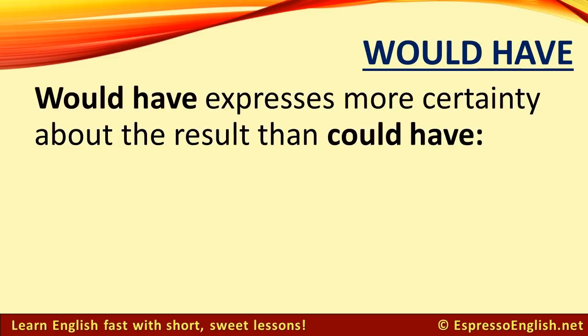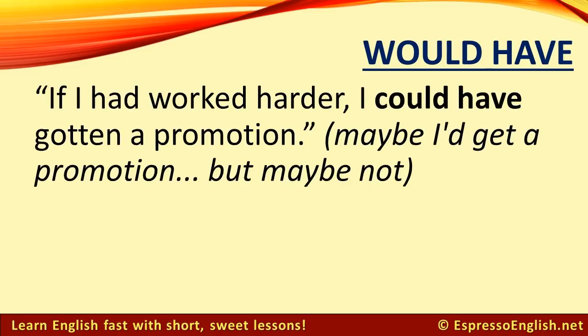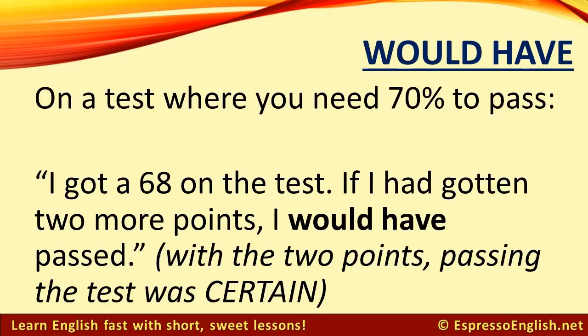Would have expresses more certainty about the result than could have. For example, if you say, If I had worked harder, I could have gotten a promotion — you're saying it was a possibility. Maybe I'd get a promotion, but maybe not. But consider a test where you need 70% to pass and you got a 68. I got a 68 on the test. If I had gotten two more points, I would have passed. Would have expresses more certainty — with the two extra points, passing the test was certain.